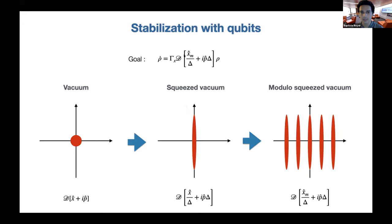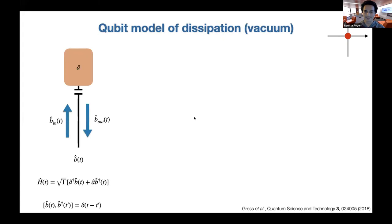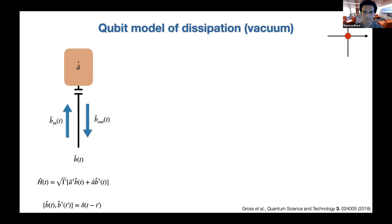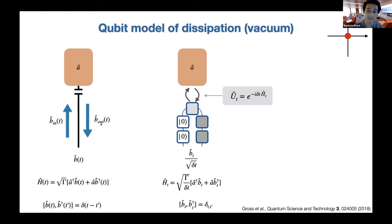The qubit acts as a Maxwell's demon, extracting one bit of entropy at a time in exactly the right way to stabilize the code space. I'll go through steps where the generalization should be clear. First, how to stabilize vacuum using a qubit: if you have a microwave cavity, you can plug a transmission line at zero temperature and naturally stabilize vacuum. In the Markovian limit this is described by a Jaynes-Cummings Hamiltonian where the harmonic oscillator exchanges excitations with the bath.